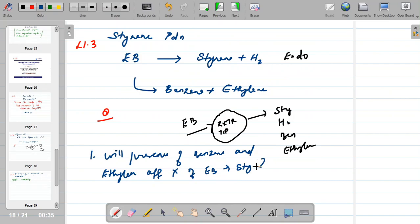For example, the first question is: will presence of benzene and ethylene affect the conversion of ethyl benzene to styrene? We need to know whether the presence of benzene and ethylene, so whether this decomposition reaction, will affect this dehydrogenation reaction. This side reaction that is occurring, which is not favorable to us, will it affect this dehydrogenation reaction?